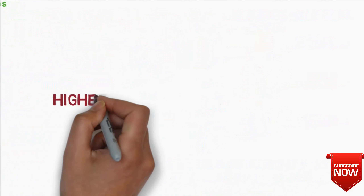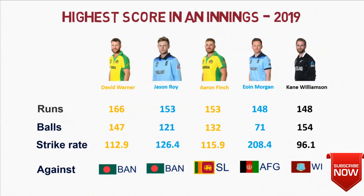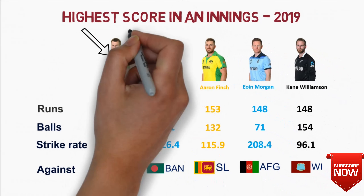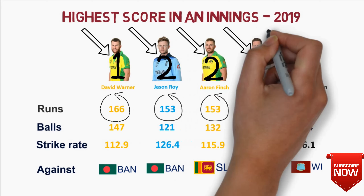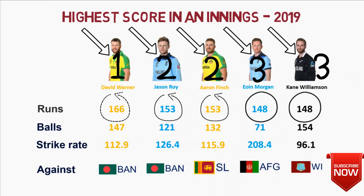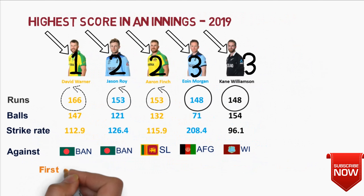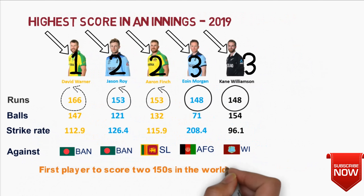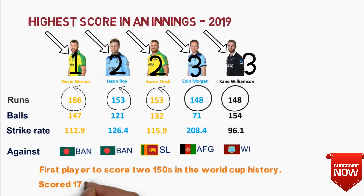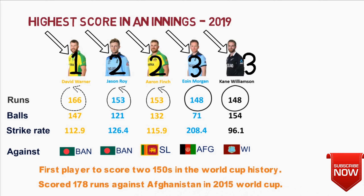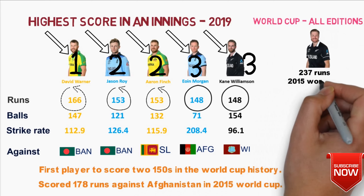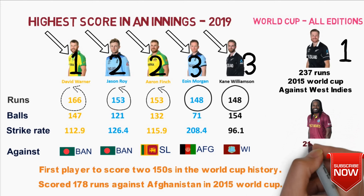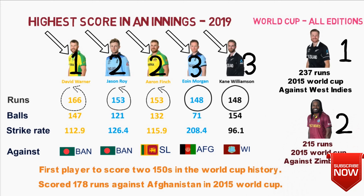The next category is highest score in an innings. David Warner tops the list with his 166 runs. After him, Jason Roy and Aaron Finch both scored 153 runs, holding second position, followed by Morgan and Williamson with 148 runs. After this World Cup, Warner has become the first player to score two 150s in World Cup history — he scored 187 runs against Afghanistan in the 2015 World Cup. Looking at this category across all editions, Martin Guptill with 237 runs holds first position and Chris Gayle with 215 runs holds second position.